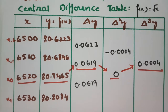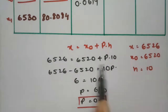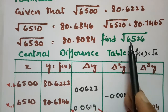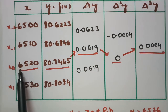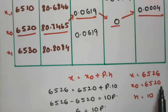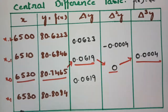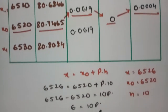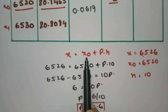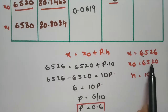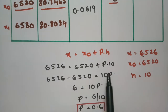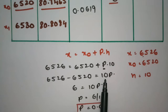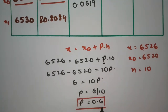The formula is x = x₀ + p·h. The x value to be found is 6526, and x₀ is the nearest backward value, which is 6520. Here h is the difference between successive x values: 6520 minus 6510 equals 10. So with x = 6526, x₀ = 6520, and h = 10, we solve for p. Rearranging gives p = (6526 − 6520) / 10 = 0.6.